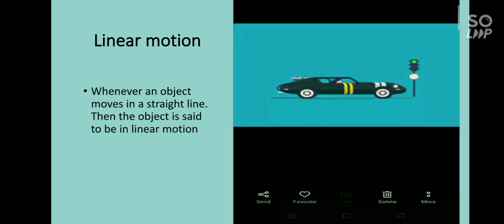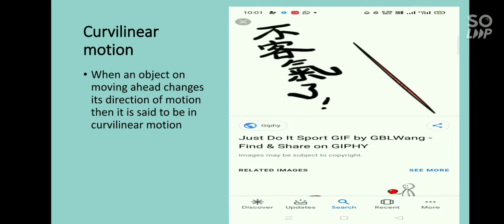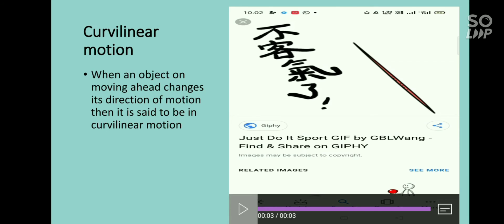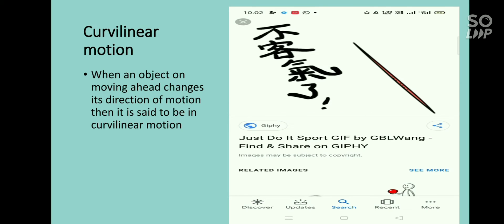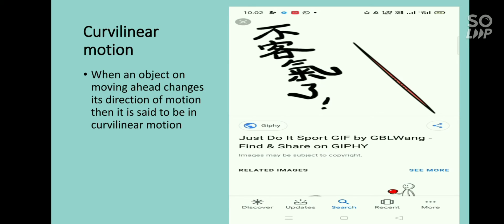Next is curvilinear motion. When an object moving forward changes its direction and takes a curved path, we call that curvilinear motion. Look at this video — the boy is throwing a javelin. The javelin is not going straight; it is changing its direction and coming down. Another example is throwing a ball: you throw it in one direction, it changes direction and comes to the ground.